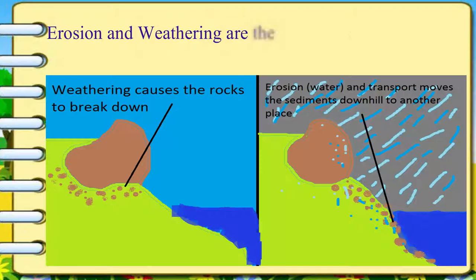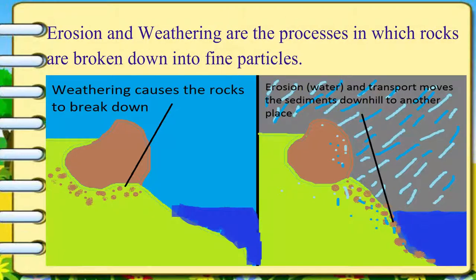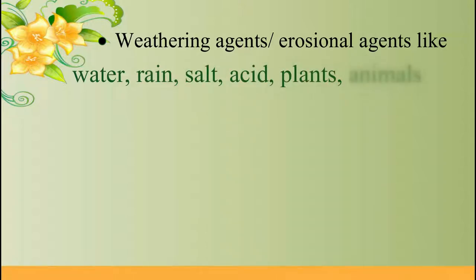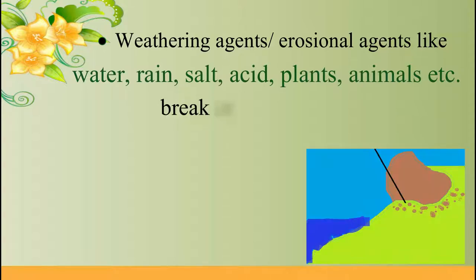Erosion and weathering are the processes in which rocks are broken down into fine particles. We know that weathering agents or erosional agents like water, rain, salt, acid, plants, and animals break or degrade the rocks.